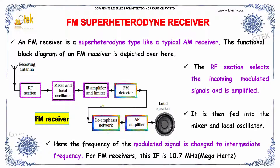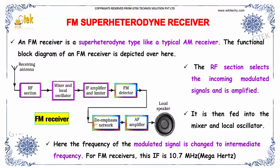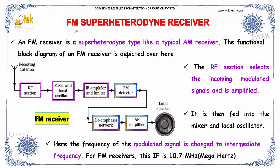An FM receiver is a superheterodyne type, like a typical AM receiver. Here is the functional diagram of the FM frequency-modulated superheterodyne receiver.